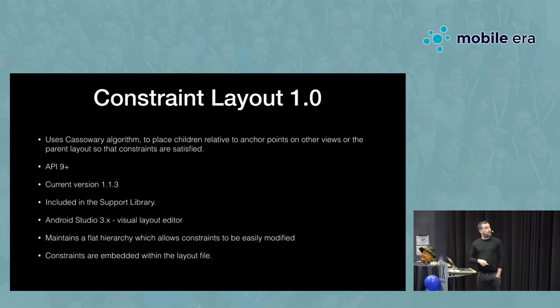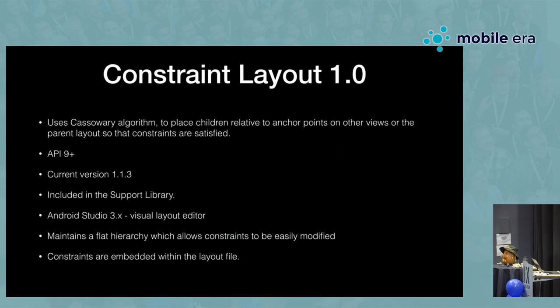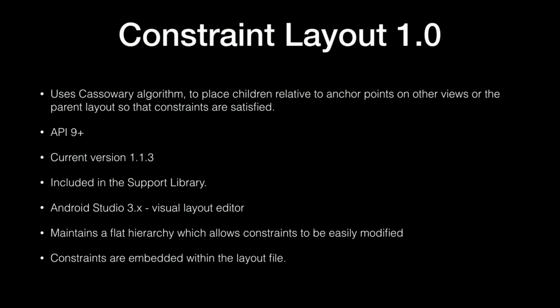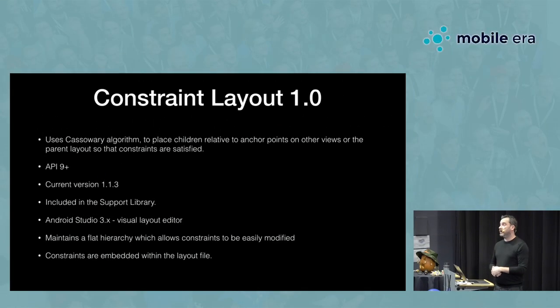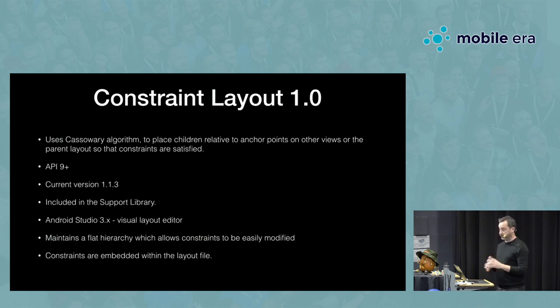A quick history. ConstraintLayout 1.0 was released a couple of years ago. It's a new way of laying out widgets on Android. It's based on the cassowary algorithm, which is the same algorithm used in iOS Auto Layout. The current version is 1.1.3, it's part of the support library, and there's a visual editor inside the latest versions of Android Studio. The great thing about ConstraintLayout was it allowed you to maintain a very shallow view hierarchy, giving great performance improvements, and also allows for easier animations — which is what we're going to talk about today.